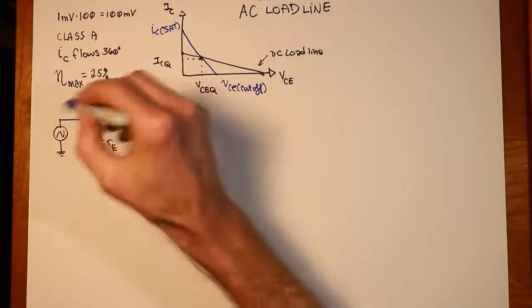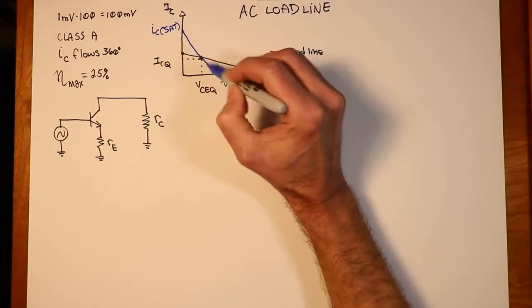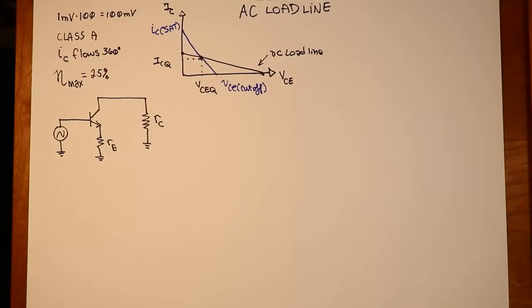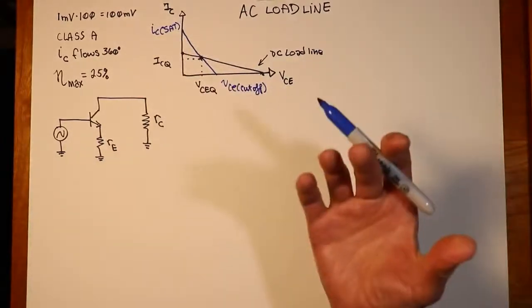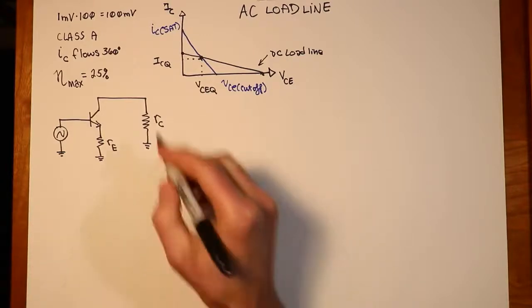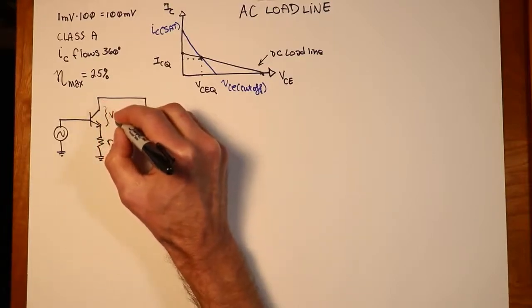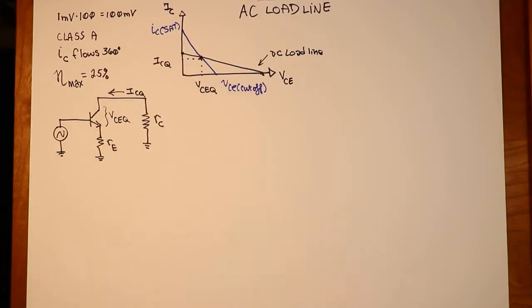As the input signal swings, positive, negative, the instantaneous operating point is swinging along this blue line, it's swinging along the AC load line. So, it swings up to a peak, swings down to a peak, and back and forth as the input signal goes. Now, ultimately, these things, the IC sat and the VCE cutoff, are going to determine just how large of an output signal swing we can arrive at. So, how do I come up with values, at least an expression, for those two endpoints? Well, we come over here to our little simplified circuit, and what we would know is that, at the quiescent point, there would be a voltage sitting across this transistor, which is VCE Q, and there would be a current flowing through here, which is IC Q.